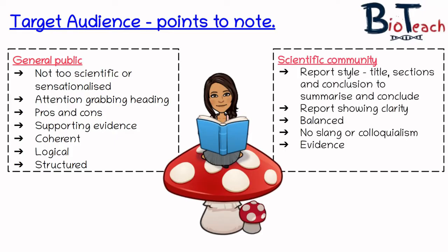With the scientific community, the information will contain technical terms, more detail and background, because the readers are assumed to have good knowledge of the concepts or the science involved. When reports are presented to the scientific community, you need to ensure that your report stands up to structural, language and intellectual scrutiny. The report's style should have a title and sections, maybe subheadings, and also a conclusion to summarise the findings. The report should show clarity in your arguments, and your argument should be balanced. You should avoid using slang or colloquialisms, and you should include evidence from scientific studies where possible. Normally, your evidence from scientific studies will come from Article 3 in your PAC.